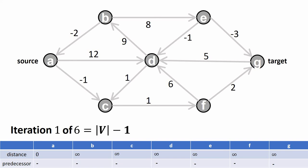We are in iteration one and we need to look at all edges. I look at all edges starting from A, but the order in which you consider edges doesn't matter — you will always end up with the same result. The first edge is A to D. The distance to A is zero but we haven't reached D yet, so its distance is infinity. Going from A to D gives us a shorter path, so we perform an update: the distance of D becomes 12 and the predecessor of D becomes A. For the outgoing edge from A to C, similarly, we can now reach C with a distance of minus one and predecessor A.